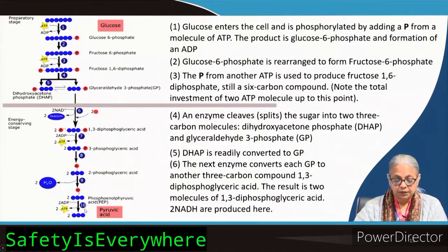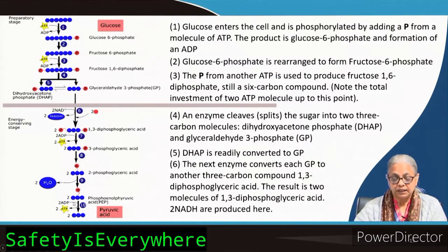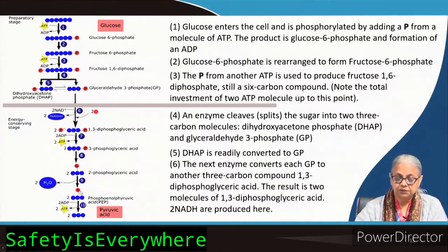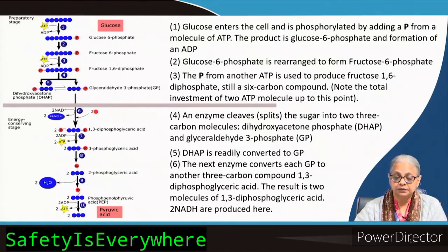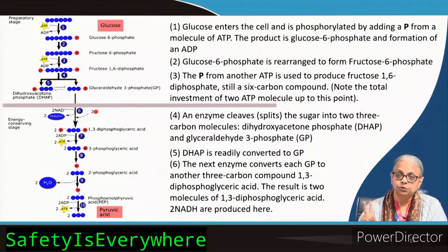In the final step we have phosphoenol pyruvic acid (PEP), which is a very important key intermediate. Again, two more ADP molecules are used — phosphate from PEP is transferred to ADP — and pyruvic acid is generated. Pyruvic acid is a C3 compound and two of them are formed. In the entire process, two ATPs were invested and four were obtained, giving a net gain of two ATPs.